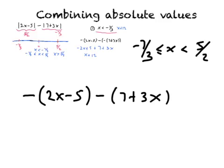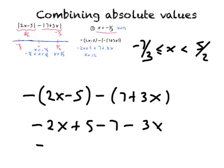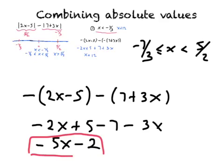Combining those terms: minus 2x plus 5 minus 7 minus 3x gives us minus 5x minus 2. This is our function on the second piece. On the first piece we found x plus 12. At the end we'll put this all together and graph it, but for now the function on the second piece is minus 5x minus 2.